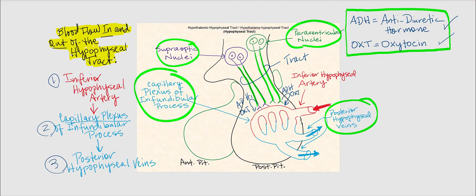Are there any endocrine cells in the posterior pituitary, as we saw in the anterior pituitary? The answer is no. The posterior pituitary does not produce any hormones because it does not contain any endocrine cells.